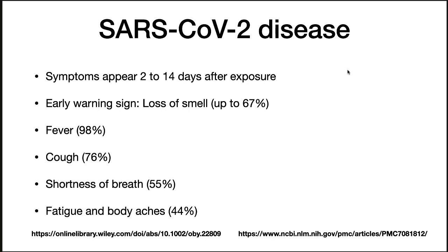Symptoms of illness appear 2 to 14 days after exposure. An early warning sign is a loss of smell. Sufferers can experience fever, cough, shortness of breath, fatigue, and body aches. The illness typically runs its course in two weeks, but infected individuals can shed virus for up to 22 days. A serious trait of this disease is the occurrence of asymptomatic carriers, which make up 25% of patients — at least that's what the latest research is showing. It's not yet clear how many of these eventually go on to show symptoms, and how many recover and never know they had the disease.